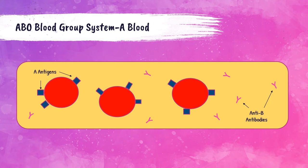If B antigen blood were given to this A patient, the anti-B antibodies would recognize those B antigens, bind to them, and cause agglutination and a transfusion reaction. However, if this A group patient received O donor blood, that would be fine, because O group blood has no A or B antigens present. The anti-B antibodies in the A patient's serum have nothing to react to, so group O blood can safely be given to group A patients.